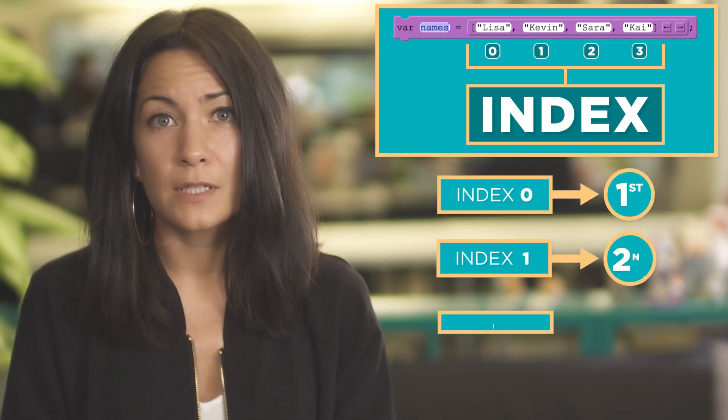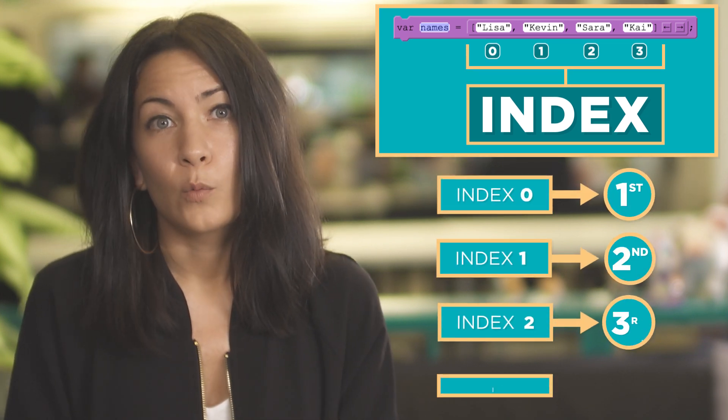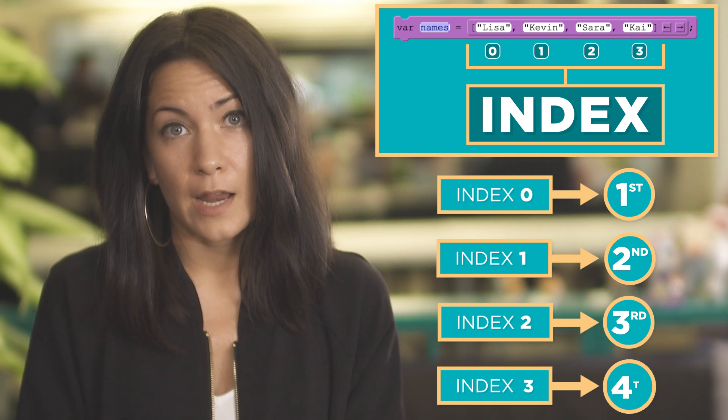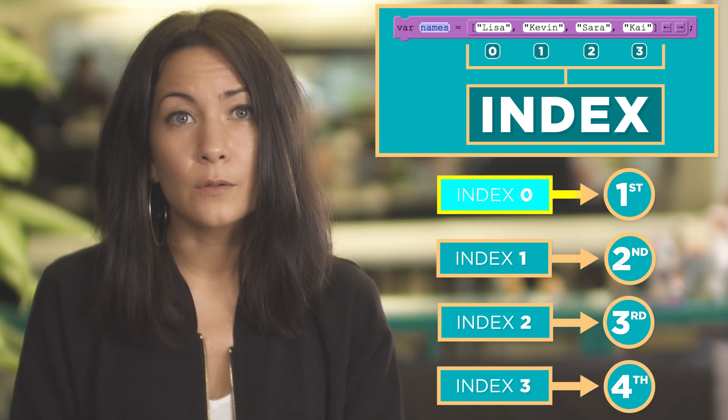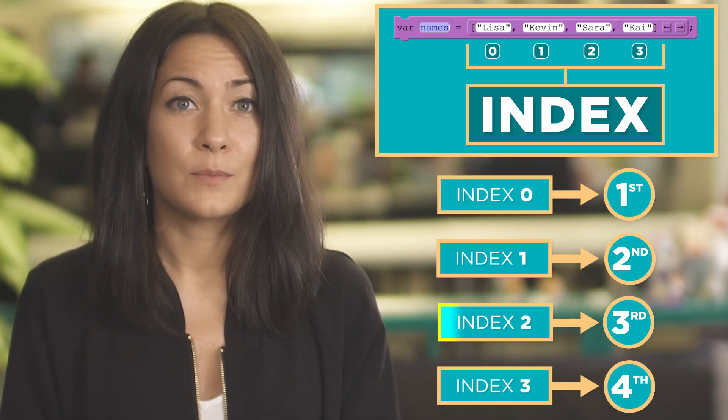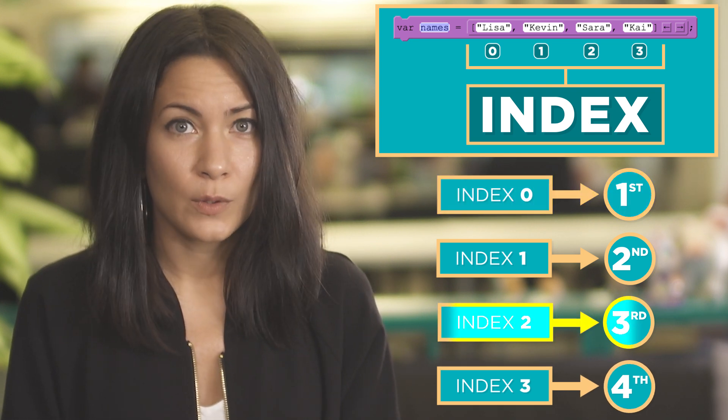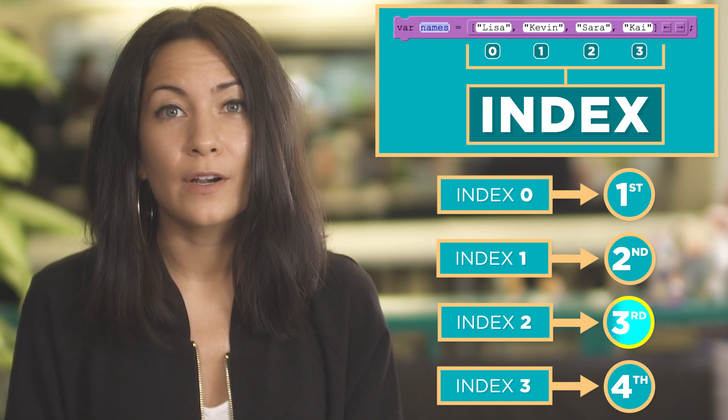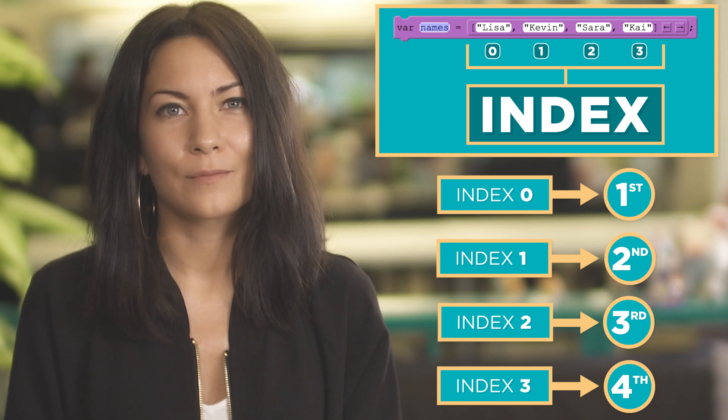You might have noticed that the first index in the array is zero. In programming, we usually start counting at zero, which means that names at index zero is the first item of the array, and names at index two is actually the third item in the array.